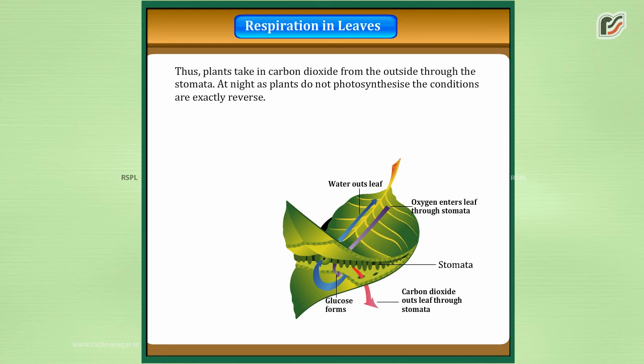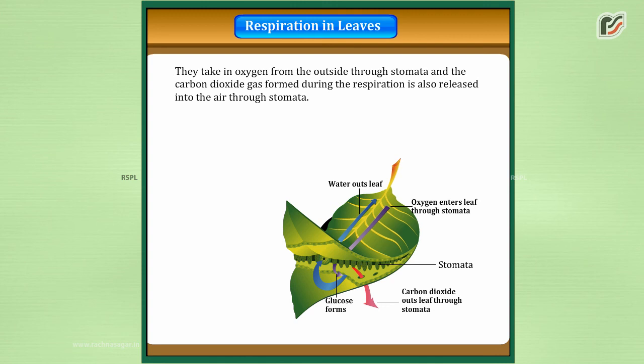At night, as plants do not photosynthesize, the conditions are exactly reverse. They take in oxygen from the outside through the stomata and the carbon dioxide gas formed during respiration is also released into the air through the stomata.